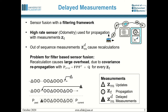From time to time, asynchronous measurements arrive — shown as dark triangles in the bottom picture — which trigger a whole cascade of recalculations. This poses a problem for filter-based sensor fusion, as the recalculations cause large overhead especially due to the covariance repropagation that needs to be done for every propagation measurement Z_T.